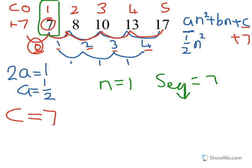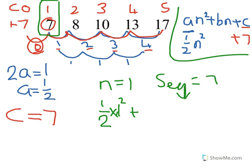If I put 1 into the formula, I know it's going to equal 7. So I've got a half times N squared — N is going to be 1 — so a half times 1 squared, plus B times 1, because N is 1, plus 7 because that's what C is, and we know that's going to equal 7.